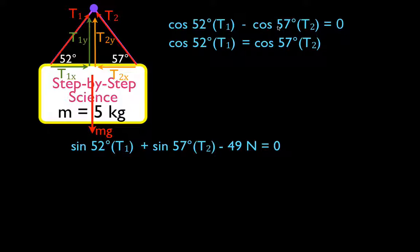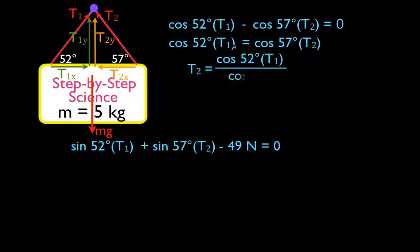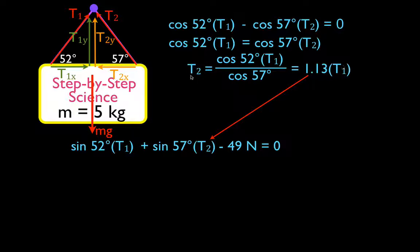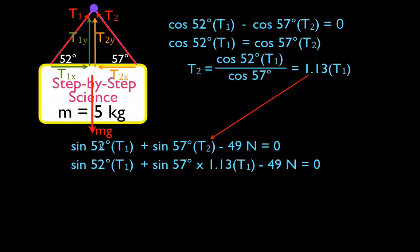We can see that those two forces are equal to each other, so we simply divide by the cosine of 57. We get that T2 equals cosine of 52 times T1 divided by cosine of 57, and that means T2 equals 1.13 times T1. So we've solved for T2 in terms of T1.